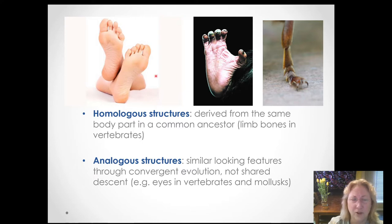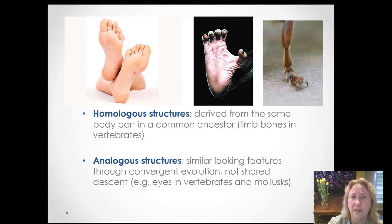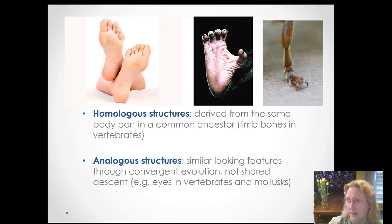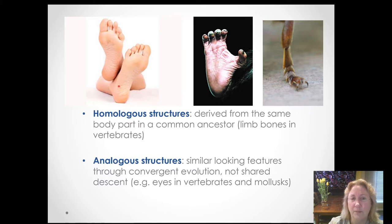For homologous structures: here's a human foot and a chimpanzee foot, which function very differently. Human feet are adapted for walking and running. Chimpanzee feet are adapted for tree climbing — they have an opposable big toe, which we don't have. But if you look at the bones and muscles in a human foot and a chimpanzee foot, they are the same. They're just arranged differently and function differently. These bones and muscles are homologous because they're derived from the same body part in a common ancestor, who lived about eight million years ago.